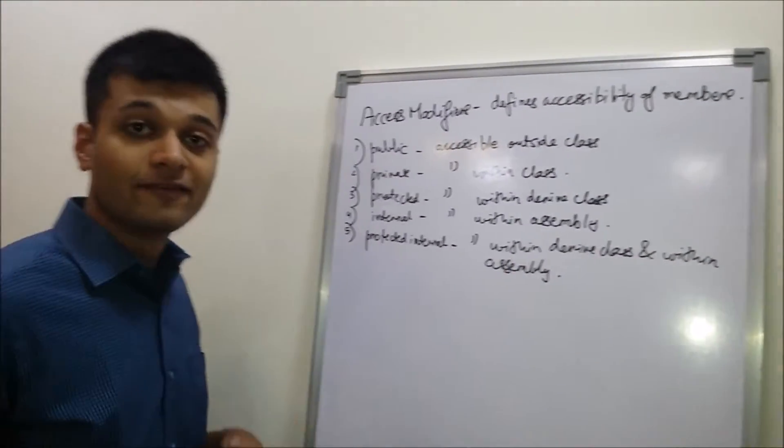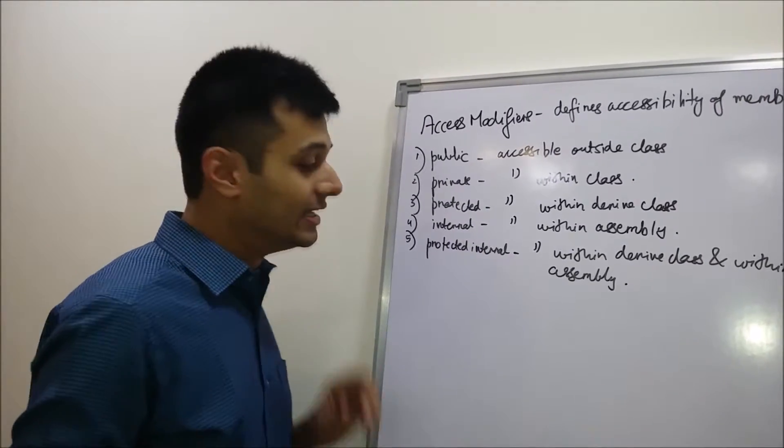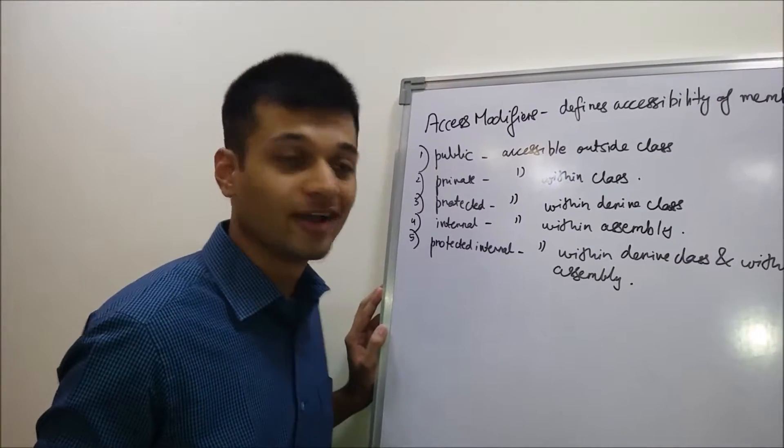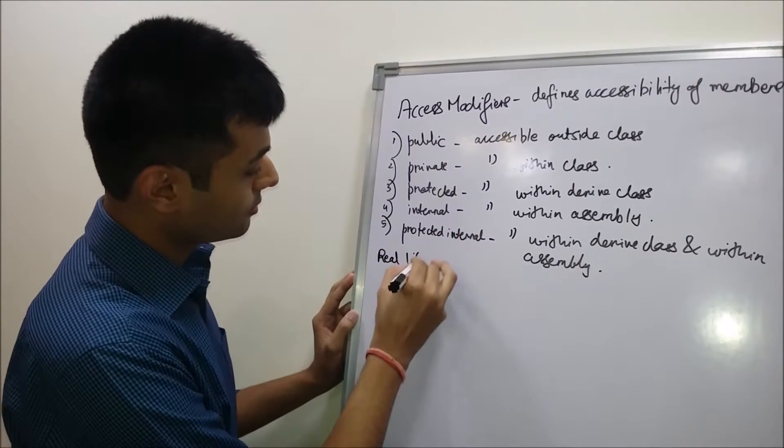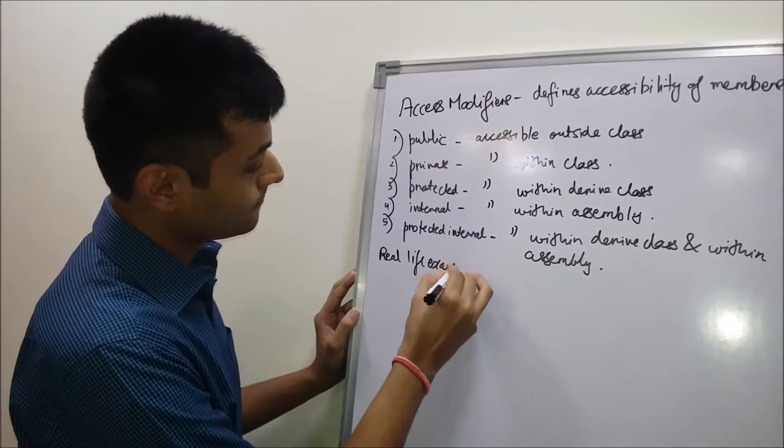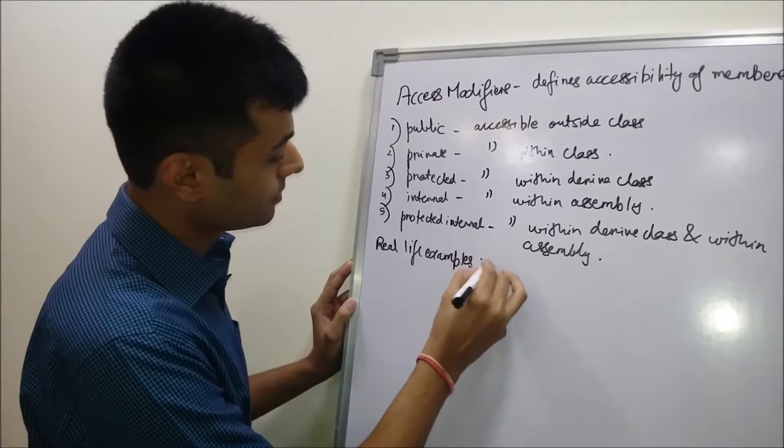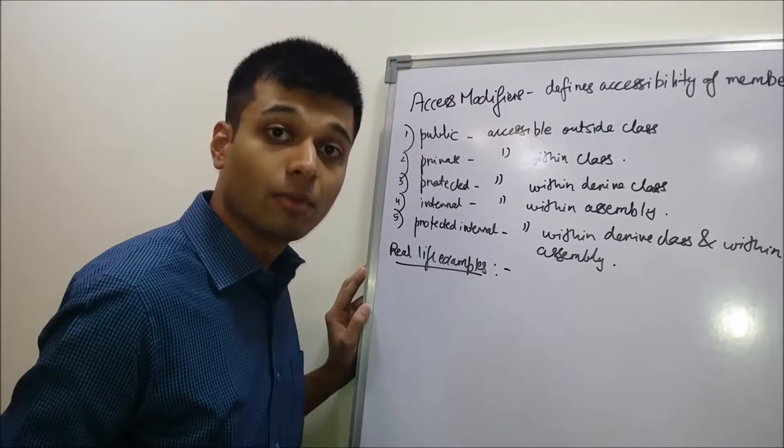These are all the definitions of access modifiers. Let's have a look at real life examples of access modifiers. First, we'll take an example of WhatsApp.